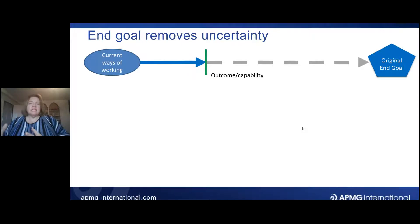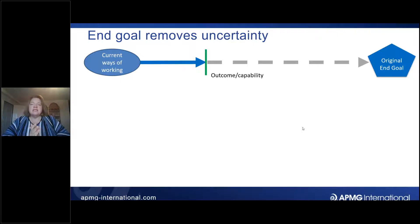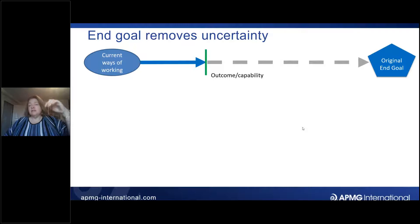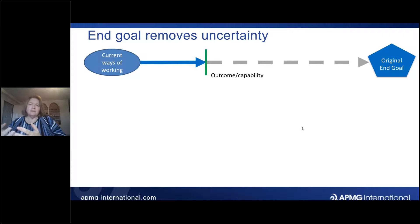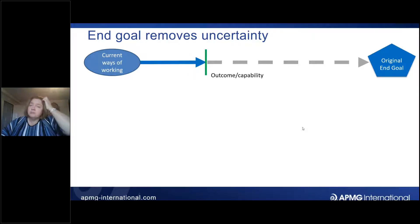With all that uncertainty, a more traditional approach — gathering all requirements up front and planning them in a Gantt chart — looked certain, didn't it? I'm going to do this, then this, then this, and at the end deliver the complete solution. I miss that because it looked like I knew what I was doing from start to finish. Of course, we know that's not the truth, because I would be knocked off course multiple times by things we weren't able to predict.